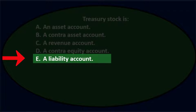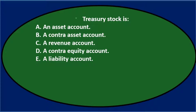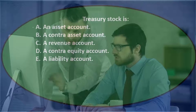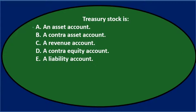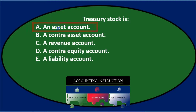We'll use the process of elimination to narrow these options down. Treasury stock — the terminology suggests some kind of stock, so you would think it would be an equity type of thing. Based on the fact that it's a stock, it's probably not going to be an asset account.